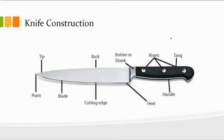Just a quick recap when we are talking about knives — this is the basic construction of a knife. You've got the point up here, the tip, the blade, the cutting edge also known as the sharp edge, the back or the spine, the bolster or shank. In this area you've got the heel, and these three rivets right here help keep the handle that encloses the tang.